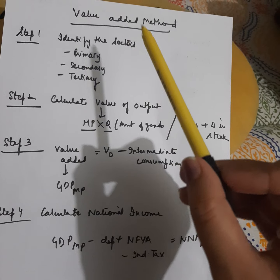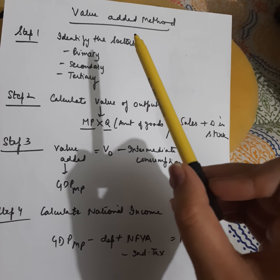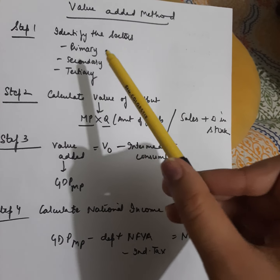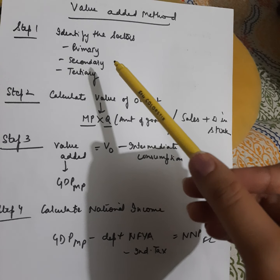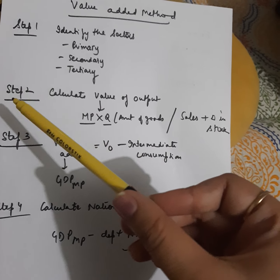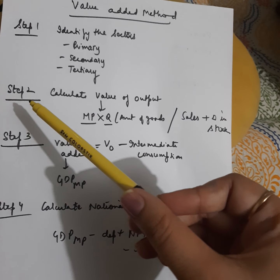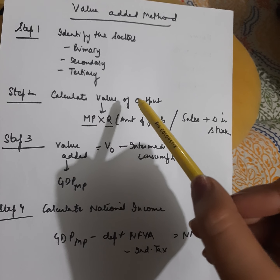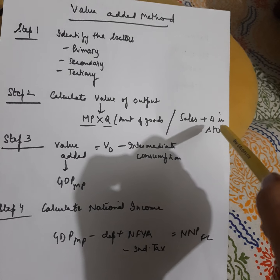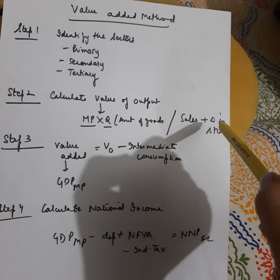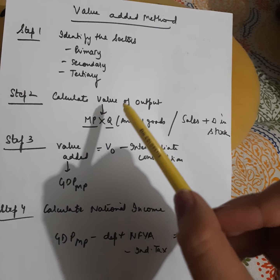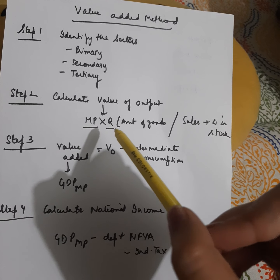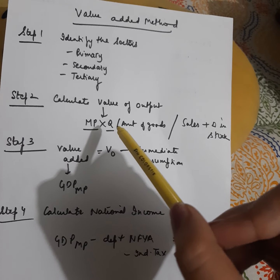You have to classify the sectors into primary, secondary, and tertiary sectors. Step number two is to calculate the value of output. Value of output is calculated as sales plus change in stock, or alternatively by multiplying the market price of the goods sold by the quantity of goods sold.